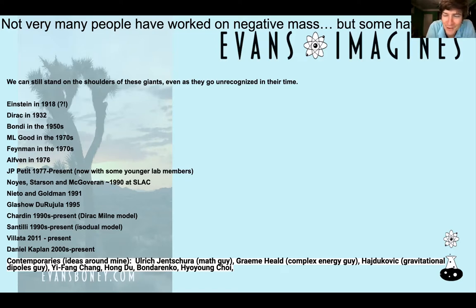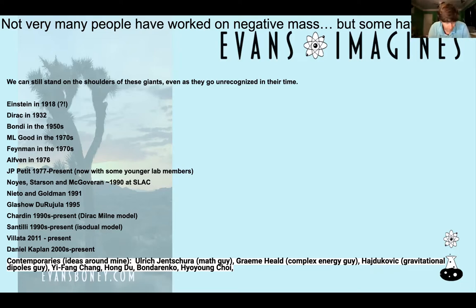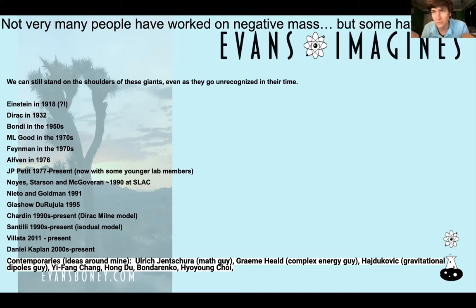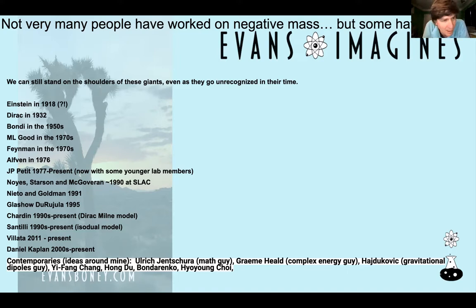Bondi in the 50s is getting things so wrong that people are still not on the right track 70 years later. ML Good in the 70s — the one guy with a great idea on this subject. He was working on the idea about a meson: a meson has a matter and antimatter quark. If you have negative mass antimatter, you should have CP violation in mesons — amazing point, totally right. Should have been a direct situation, immediate Nobel Prize. His model of the meson should have been accepted right then. CKM theory shouldn't have ever happened.